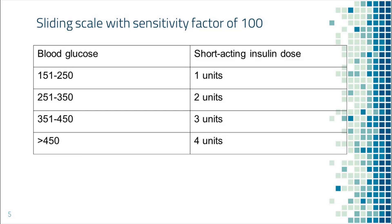This is what this sliding scale looks like. You take one unit of short acting insulin for blood sugar between 151 to 250, two units for blood sugar between 251 to 350, and so on. You take one additional unit for every 100 points of blood sugar above 150.